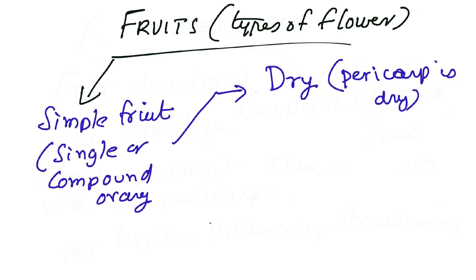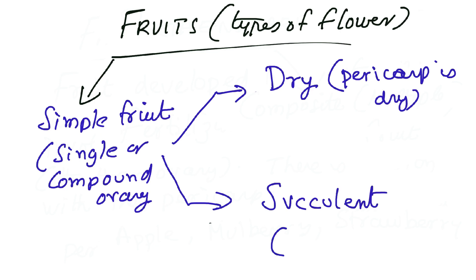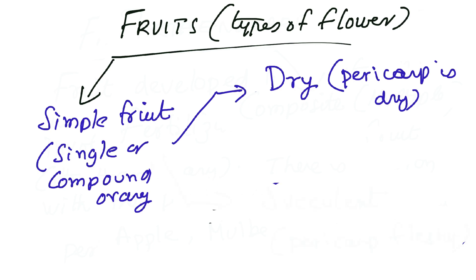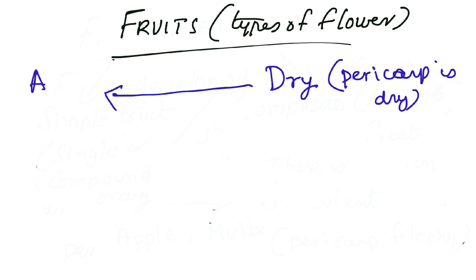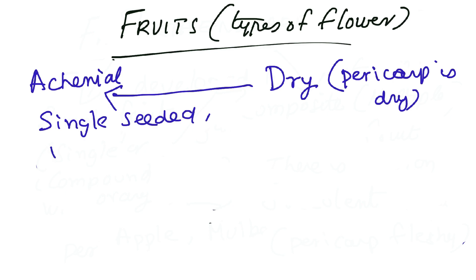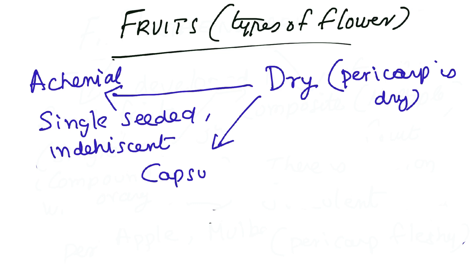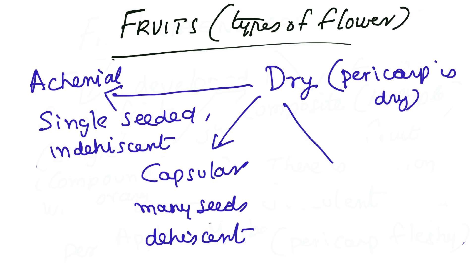Simple fruits are further divided into dry fruits and fleshy fruits. In dry fruits, the pericarp is dry, while in fleshy fruits the pericarp becomes fleshy. Dry fruits are subdivided into three categories: the first is achenial, which means the fruit is single-seeded and indehiscent. The second subdivision is capsule, which has many seeds and is dehiscent.